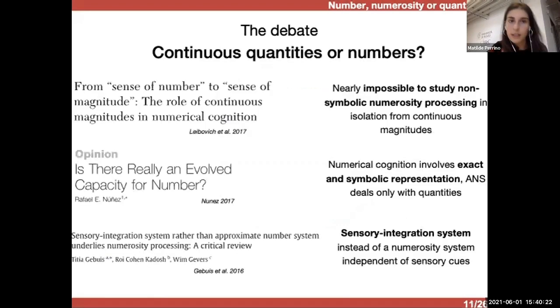So in particular, the problem and the debate regards the fact that if we are really representing numbers of continuous quantities, so there is this famous paper in the field from Leibovic and colleagues, which state that it's nearly impossible to study non-symbolic numerosity processing in isolation from continuous magnitudes. This is due to the fact that if you have two sets, you can control some continuous variables, for example, the area of them and try to isolate the different numerosity, but there will always be another continuous magnitude that you will not be able to control because you cannot control all of them at the same time. So the perimeter, for example, will be not controlled.